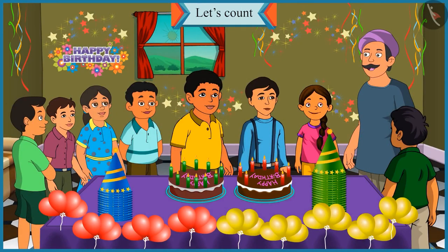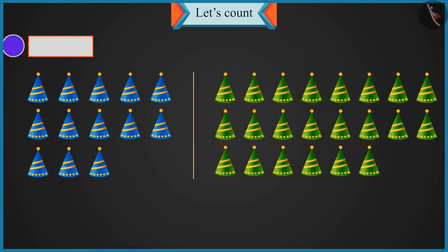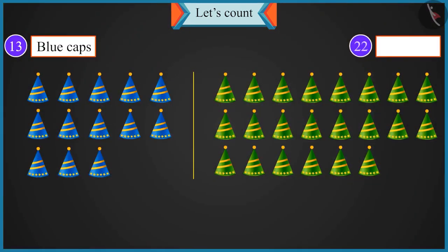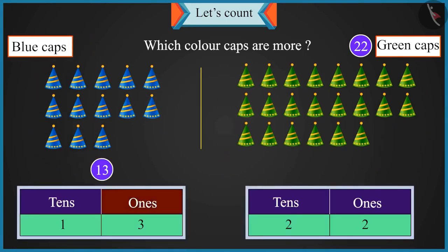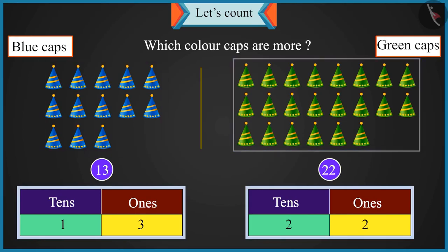Chotu, now look here. We have thirteen blue caps and twenty-two green caps. So which color caps are more? Three is in the place of ones in thirteen and two is in the place of ones in twenty-two. So thirteen caps are more than twenty-two caps.